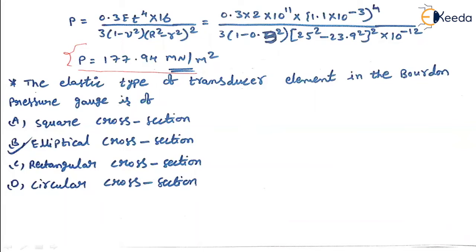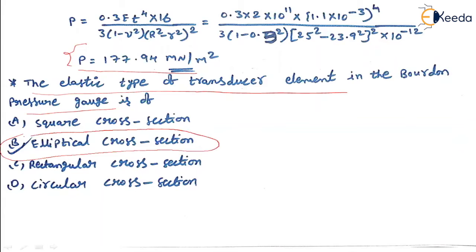Before going to the next concept, the elastic type of transducer — the element in the bourdon tube pressure gauge — the bourdon tube consists of a square cross section, elliptical cross section, rectangular cross section, or circular cross section. The elliptical cross section is what I am going to explain in this session. We are going to study about the bourdon tube and all those things.